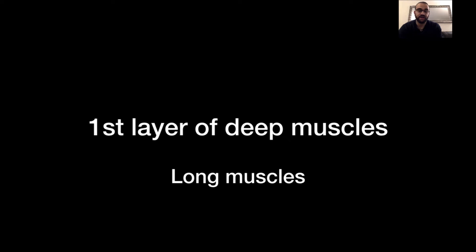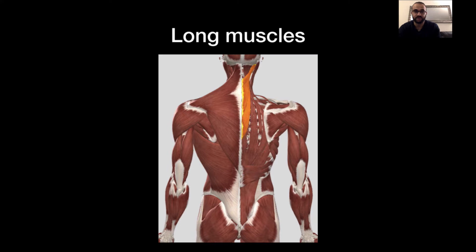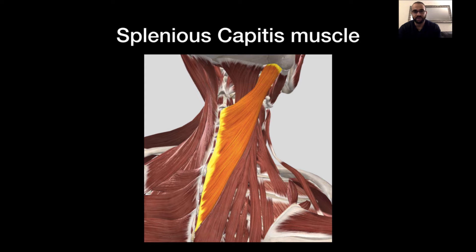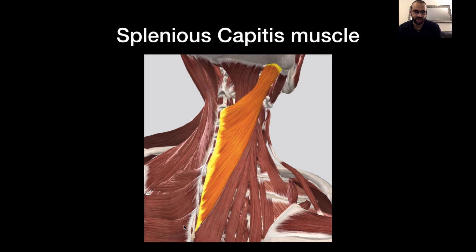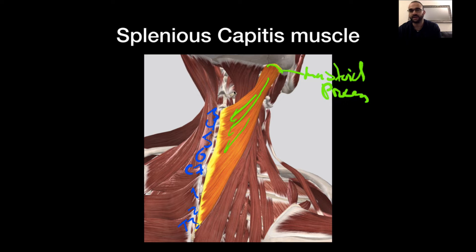The first layer of the deep muscles starts with the long muscles and the erector muscles. The long muscles are the splenius muscles, mainly responsible for extending the head and neck and rotating it to the side. Starting with the splenius capitis muscle — this part sits on the head. It originates from C3 to T3 and inserts at the mastoid process of the skull. When the muscle contracts, it moves laterally, rotating the head and also extending it.